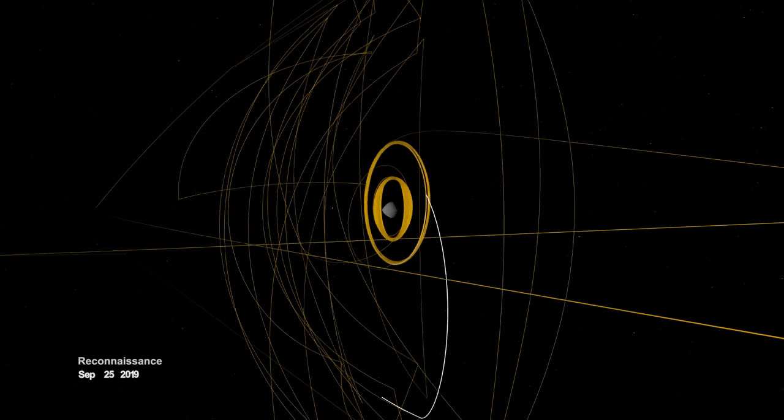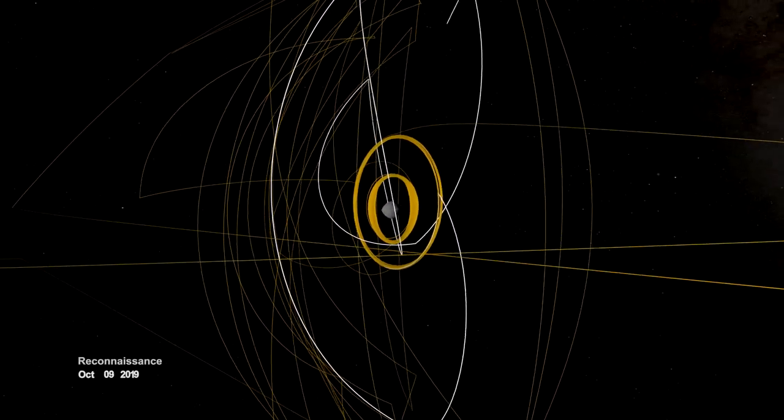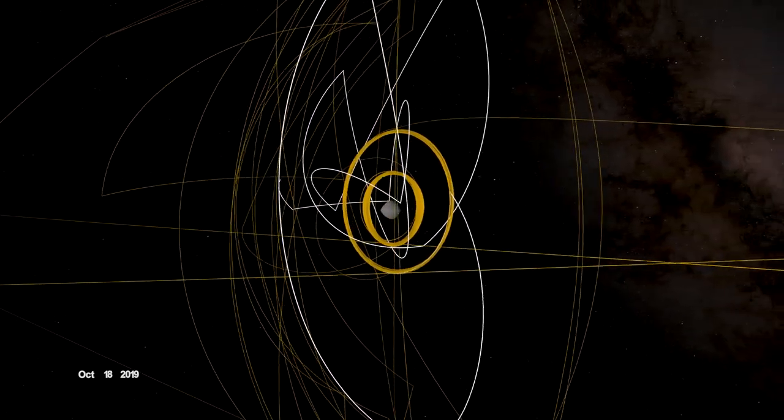In September, it began reconnaissance on four candidate sample collection sites, potential locations on Bennu to touch down and collect a sample later in the mission.